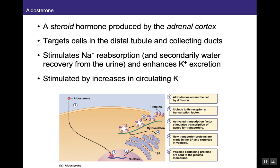Now let's discuss aldosterone, the second extrinsic mechanism. Aldosterone is a steroid hormone produced by the outer portion of the adrenal gland — the adrenal cortex. It targets cells in the distal tubule and collecting duct, just like vasopressin. Aldosterone stimulates specifically sodium and chloride reabsorption, and if vasopressin is also present, it stimulates water reabsorption. In addition, it enhances potassium secretion and excretion. Interestingly, aldosterone is released in response to increases in circulating potassium.